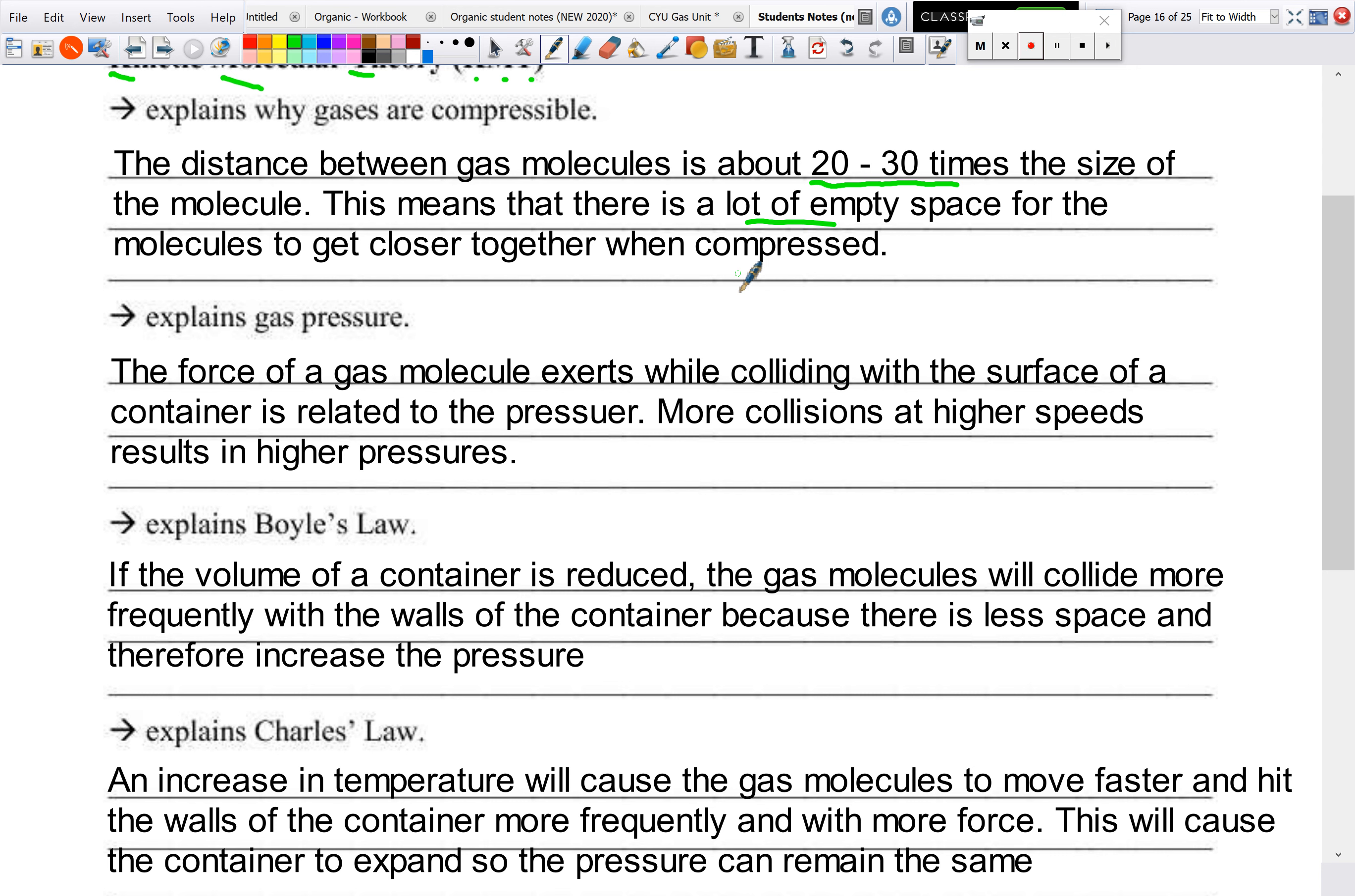Now as for why gas exert pressure. So the force a gas molecule exerts when colliding with the surface of a container is related to the pressure. That should be RE and not ER. So what this means is the more collisions at higher speeds result in higher pressures because they're exerting more forces. So basically pressure results in how many collisions are and then of course the speed at when it's hitting the walls of the container that it's contained in.